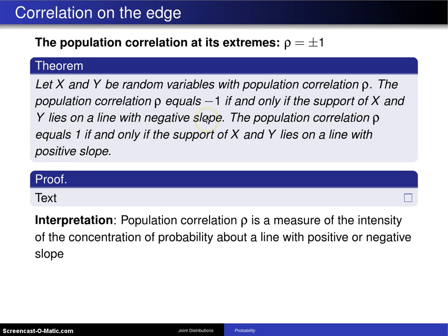Down at the bottom here, I'll draw a quick picture of that particular situation. Here is x, here is y. In the discrete case, if we happen to have points such as these, and we can draw a line through them, and if that line has negative slope, then the correlation will be negative 1.